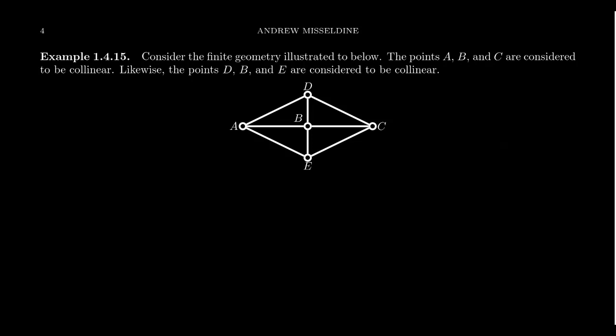In the previous video, we introduced the three parallel alternatives, for which their names are the following. We have the Euclidean parallel postulate, which we're going to typically call EPP for short. We have the hyperbolic parallel postulate, HPP.